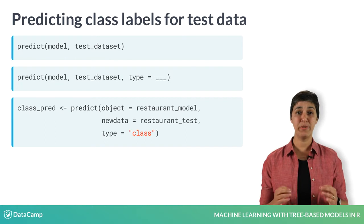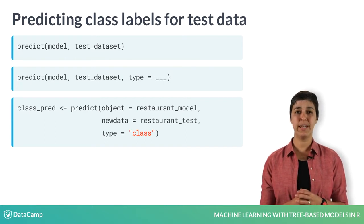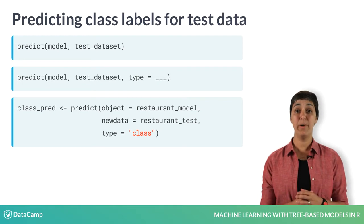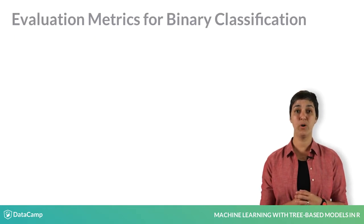In this chapter, we'll look only at predicted class labels and evaluate the performance of the model based on classification error on a test set.